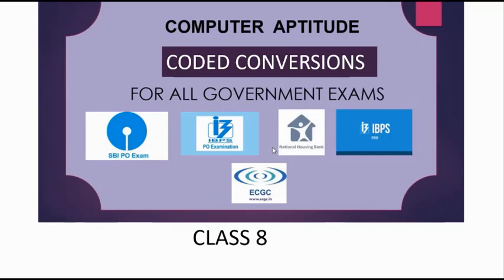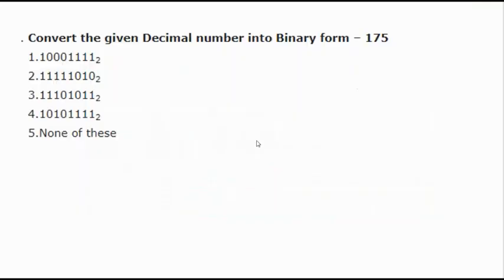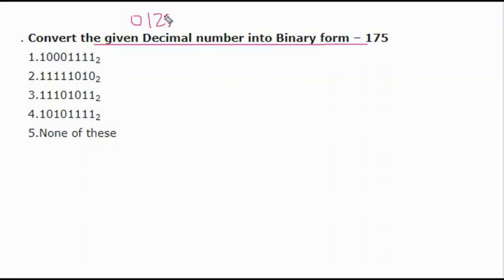If you like the video please like, share it with your friends, and subscribe to my channel. Now let's go to the first question: convert the given decimal number into binary. Decimal is 0, 1, 2, 3, 4, etc., but binary has only two digits — 0 and 1. We need to convert decimal 175 into binary.